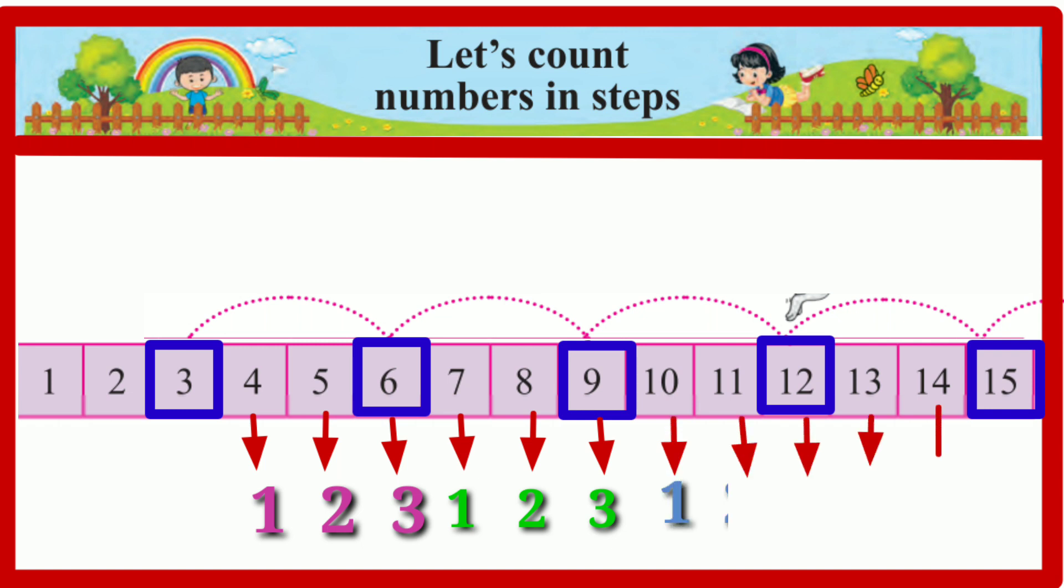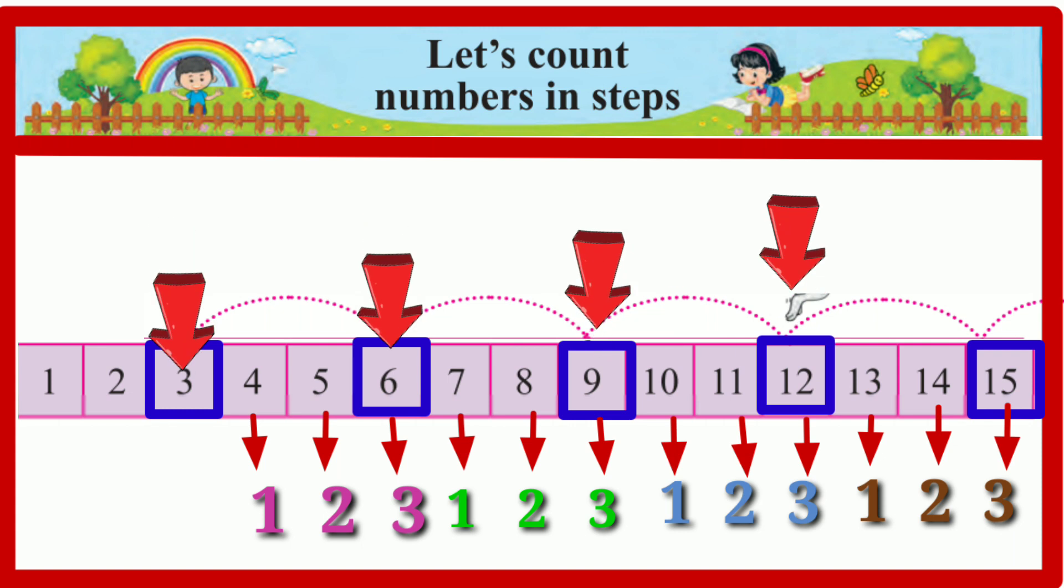Here, by counting 3 forward every time, we get each next number. Starting from 3 and counting in steps of 3 the numbers we get are 6, 9, 12, 15.